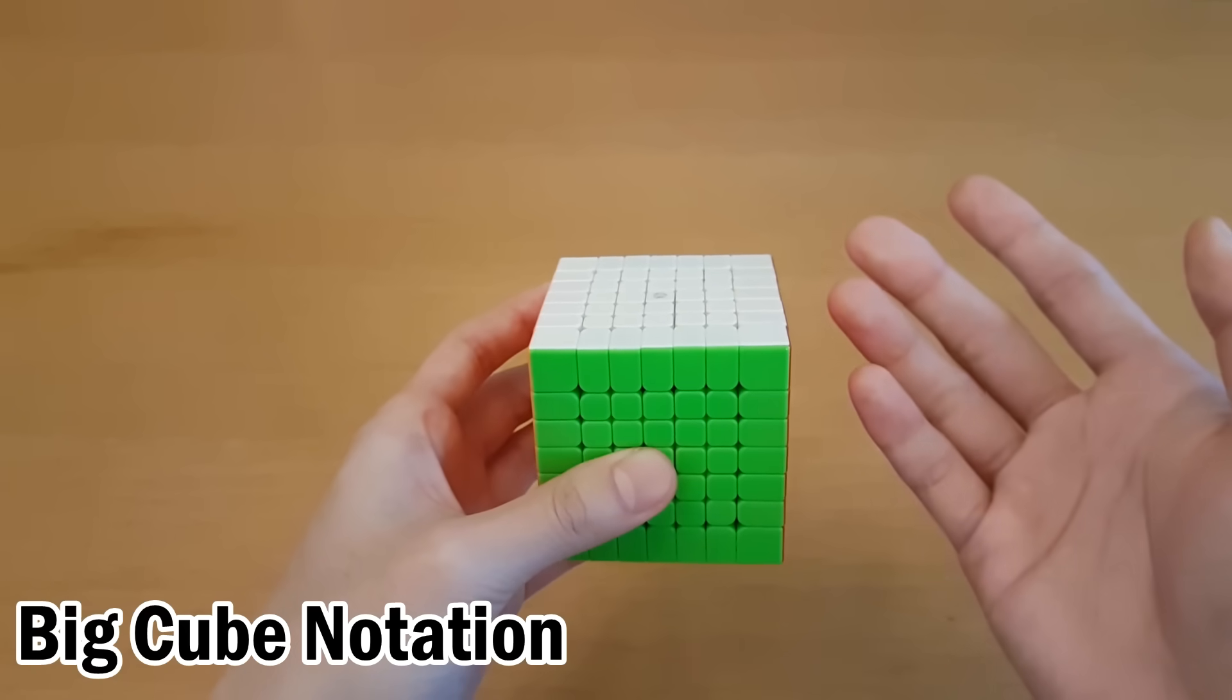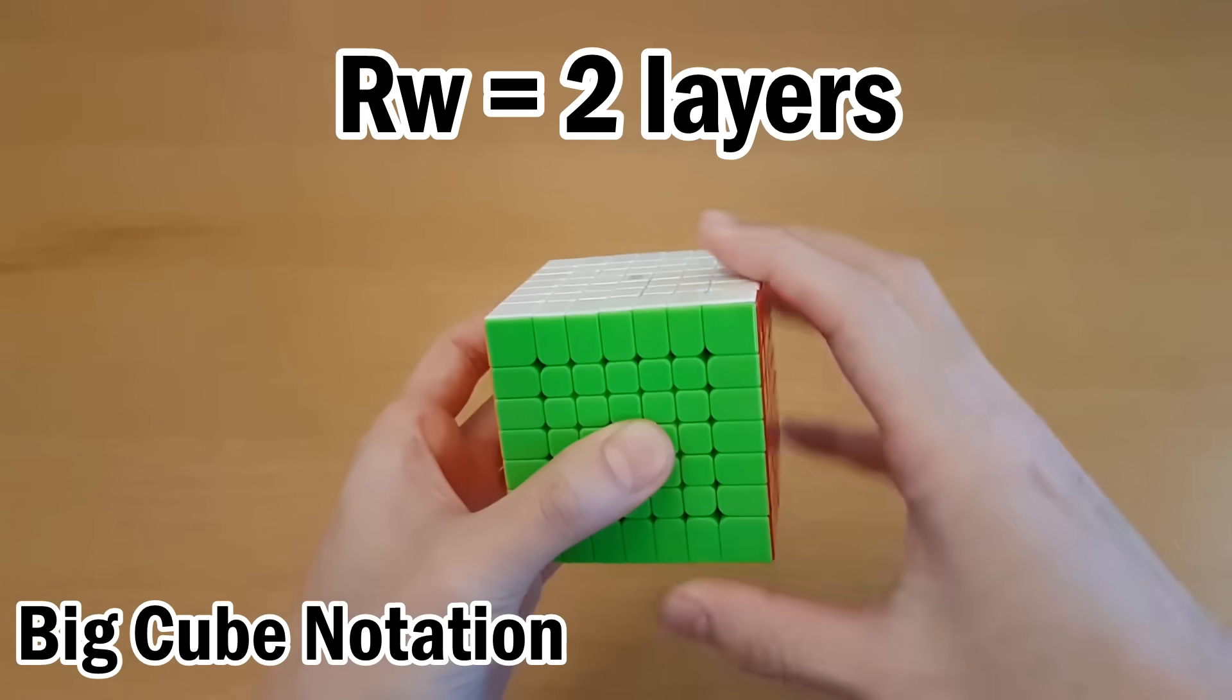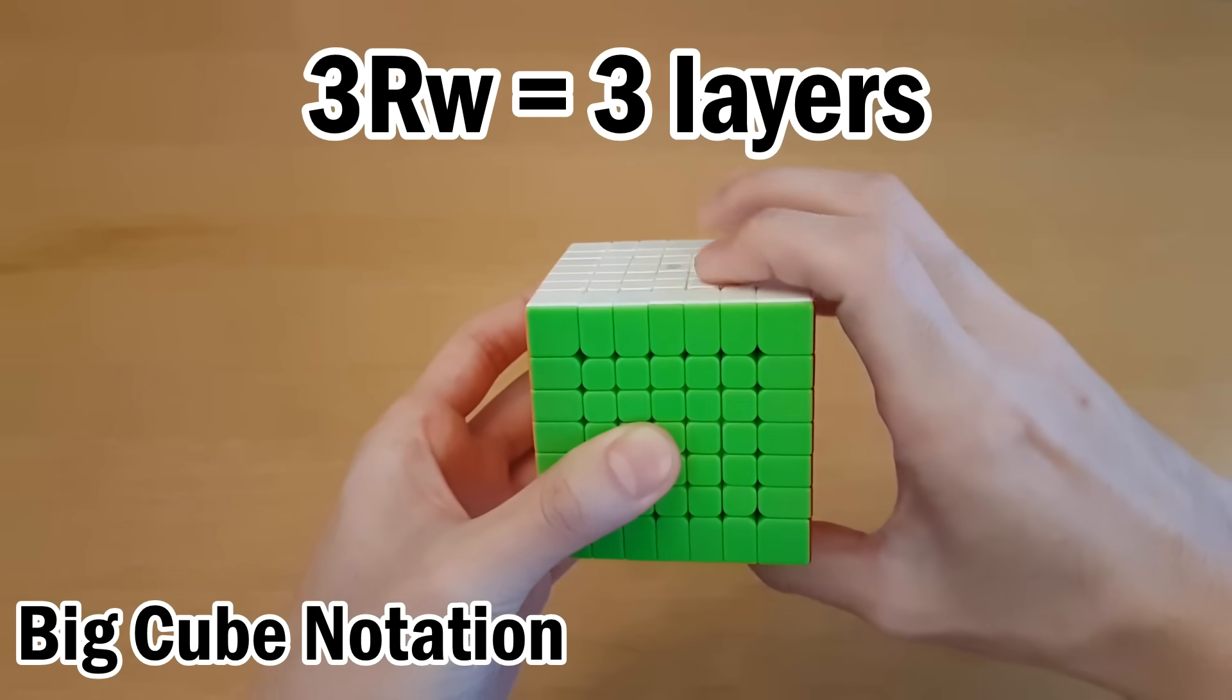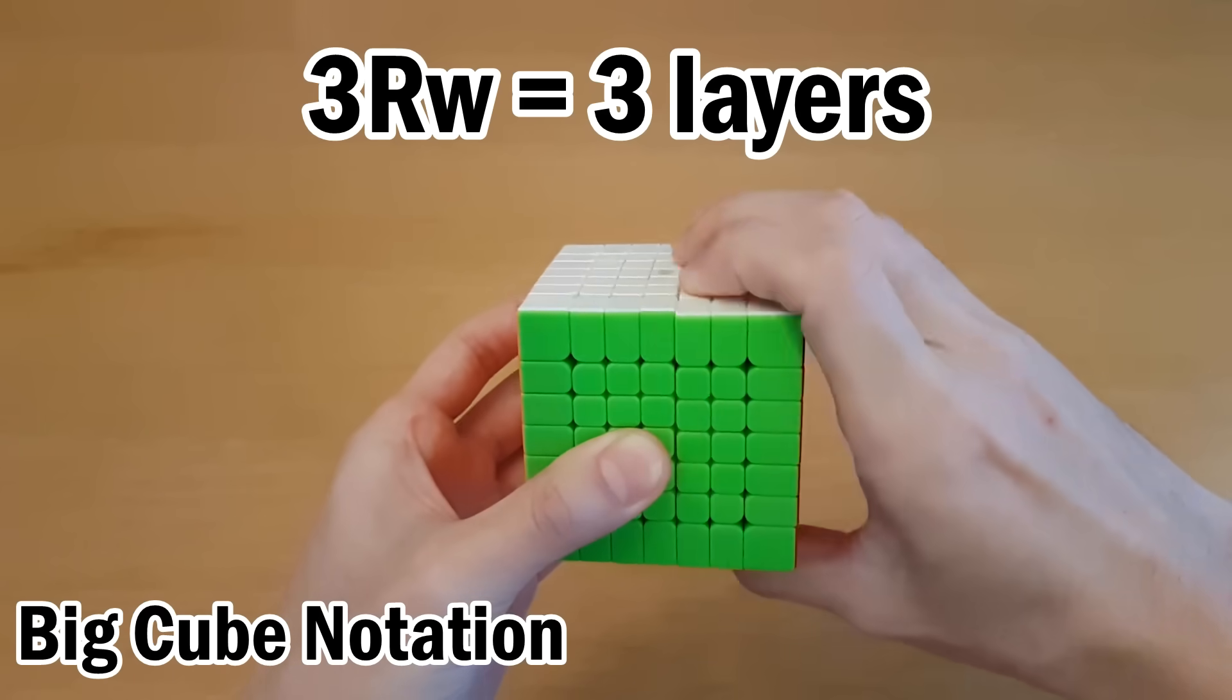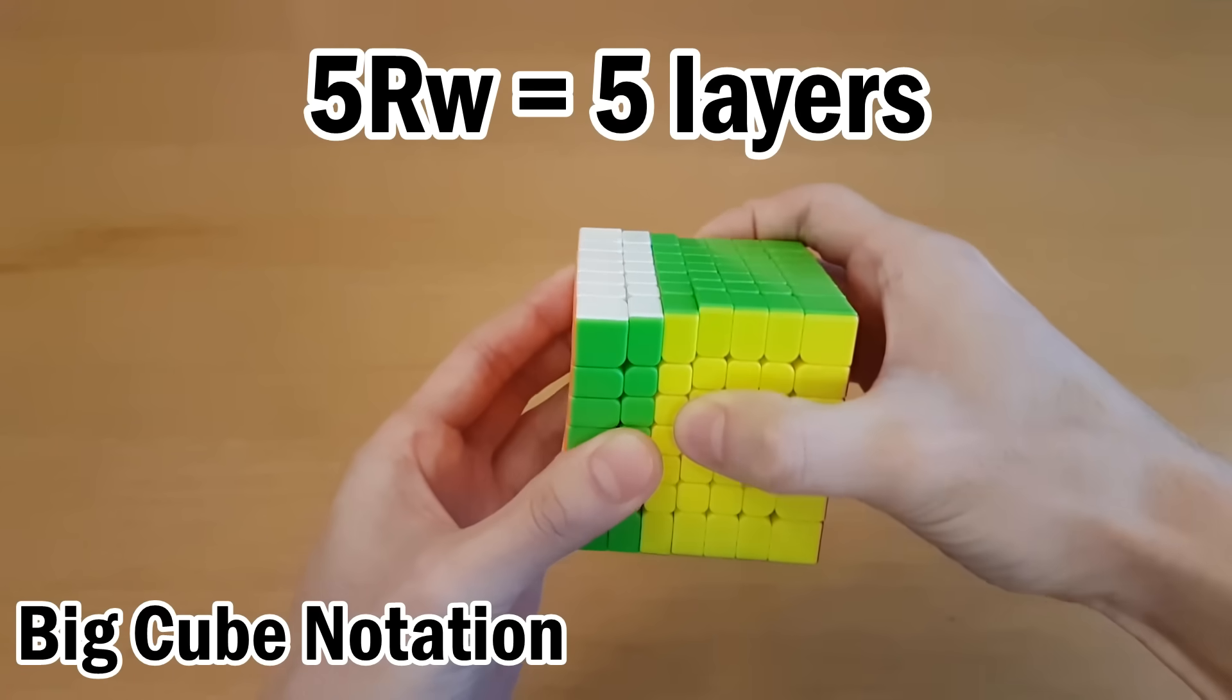for the most part we stop using lowercase letters, but Rw still means turn two layers for R. If you put three in the beginning, it means turn three layers instead. This is 4Rw, 5Rw, and so on.